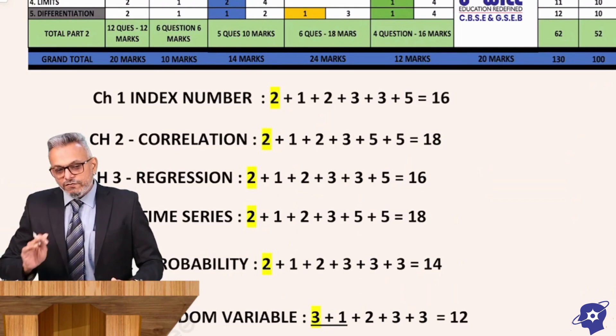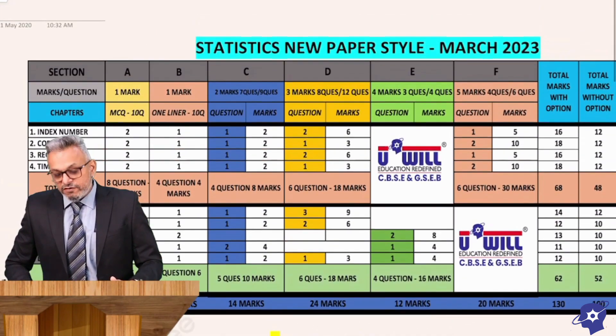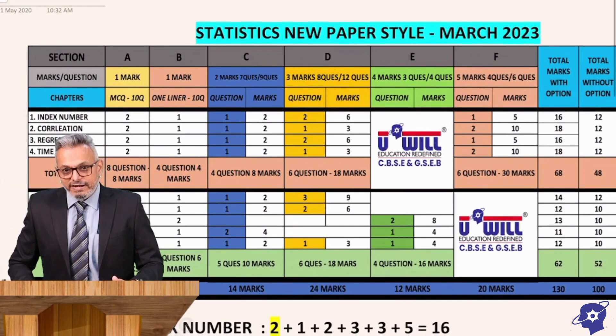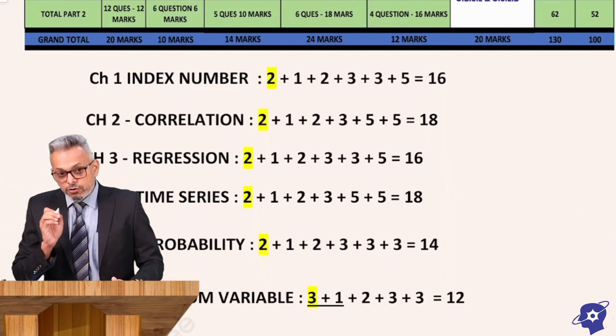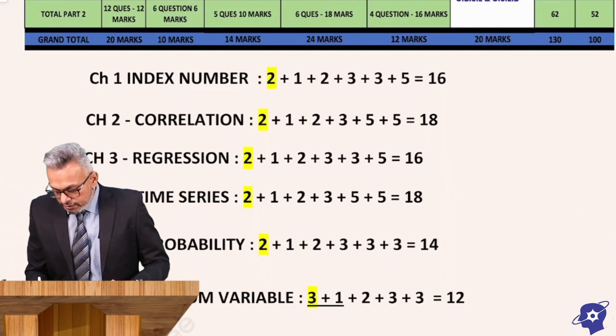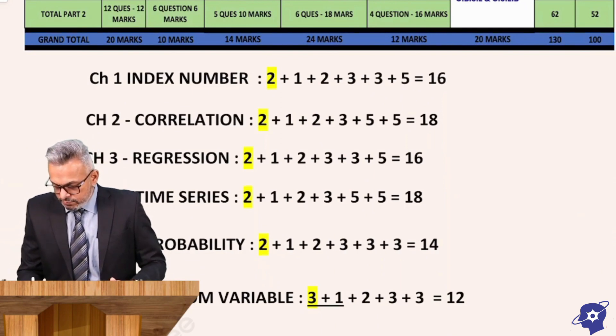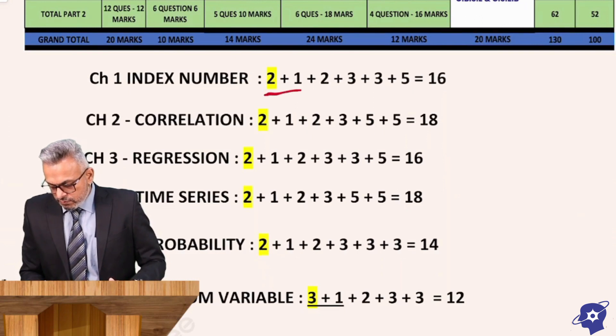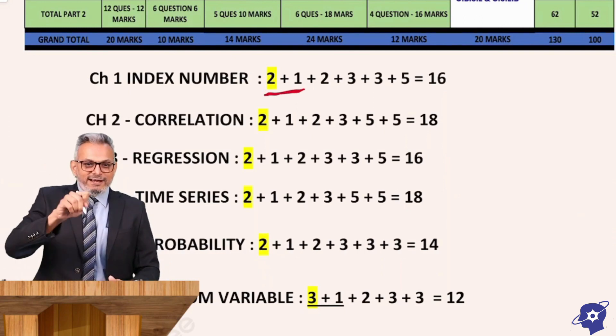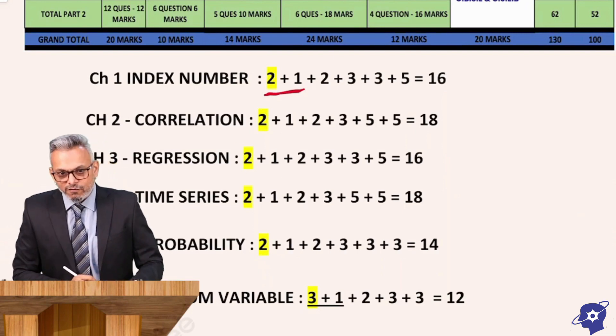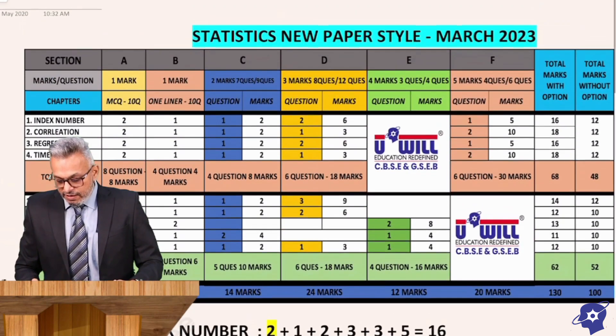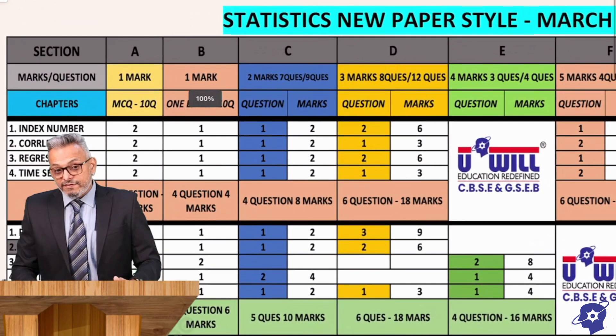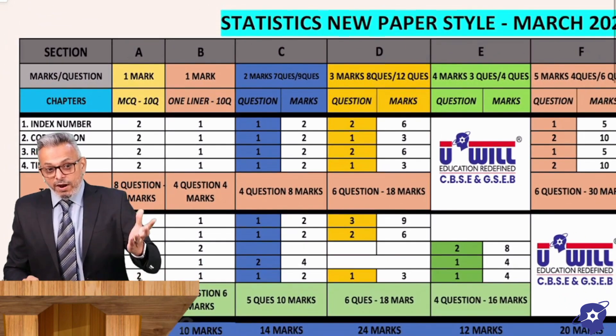Index Number chapter will have a weightage of 16 marks. You can see 2 has a yellow mark here. Yellow mark means the first question section A, that is multiple choice question. The good part of the new paper style is they have not changed the sections. So A, B, C, D, E, F remains the same.